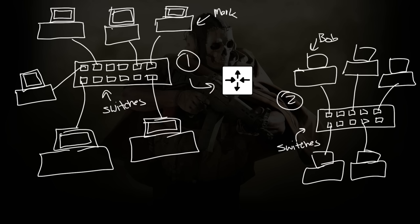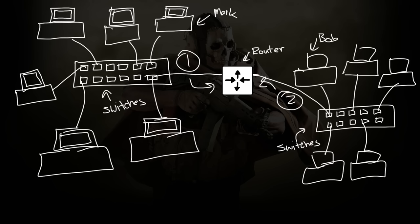Routers help these two networks talk to each other. So we connect our switch up to our router. At a very high level, Bob says, 'Hey, I want to talk to Mark.' He asks his network — everyone says Mark's not here. So Bob goes to the router and asks, 'Router, is Mark anywhere?' The router says, 'Yeah, I think I might know where he is.' And now Mark and Bob can talk to each other.